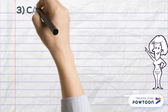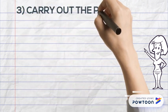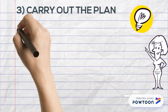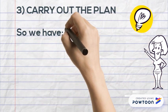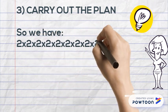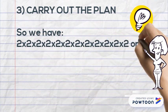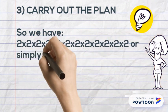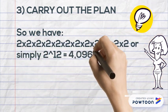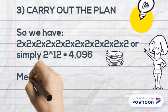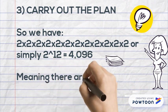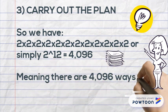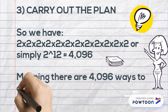Third, carry out the plan. We multiply 2 twelve times, or simply 2 to the power of 12, which equals 4,096. This means there are 4,096 ways to answer a 12-question true-or-false test.